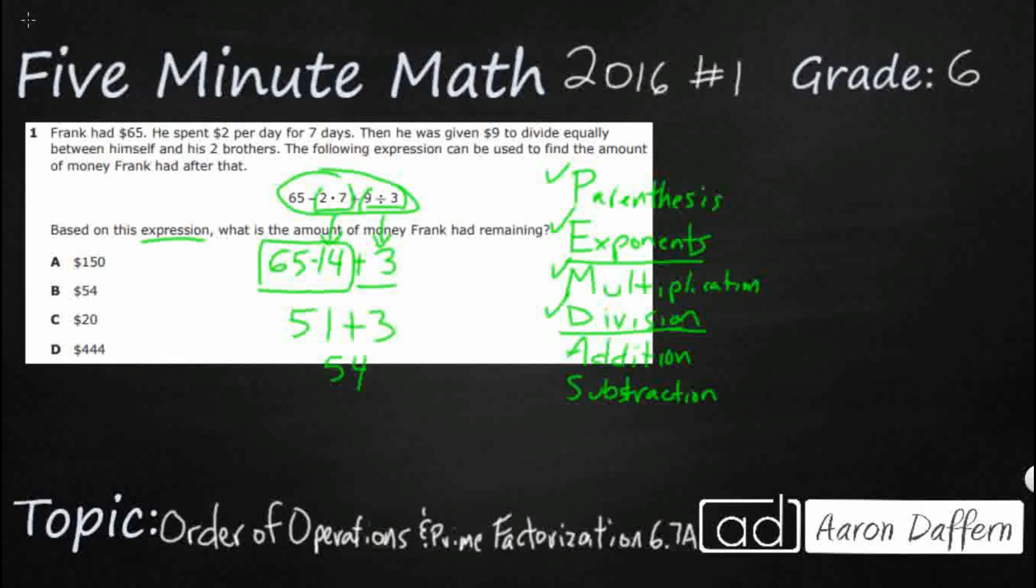So our answer here is going to be B, $54 left. Now that makes sense. He had 65. He spent some money, $2 per day, but then he was given a little bit more money to divide equally. So that seems like it's going to be right.